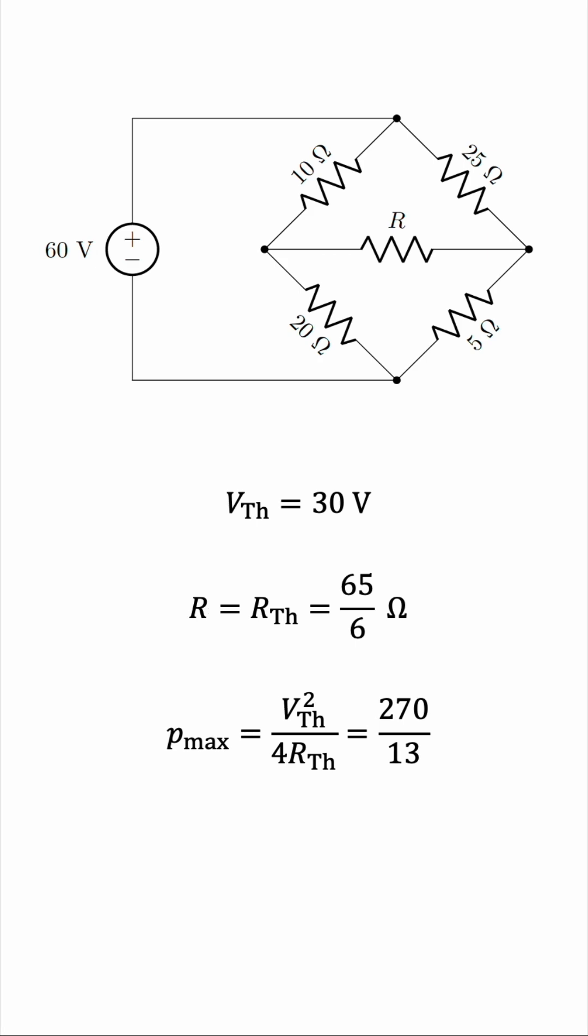And now, and only now, let's represent this result in a decimal, because we have no more work to do, so no rounding error will result. This is approximately 20.77 watts, and this is the maximum power that can be delivered to the resistor R in the bridge circuit we started with.